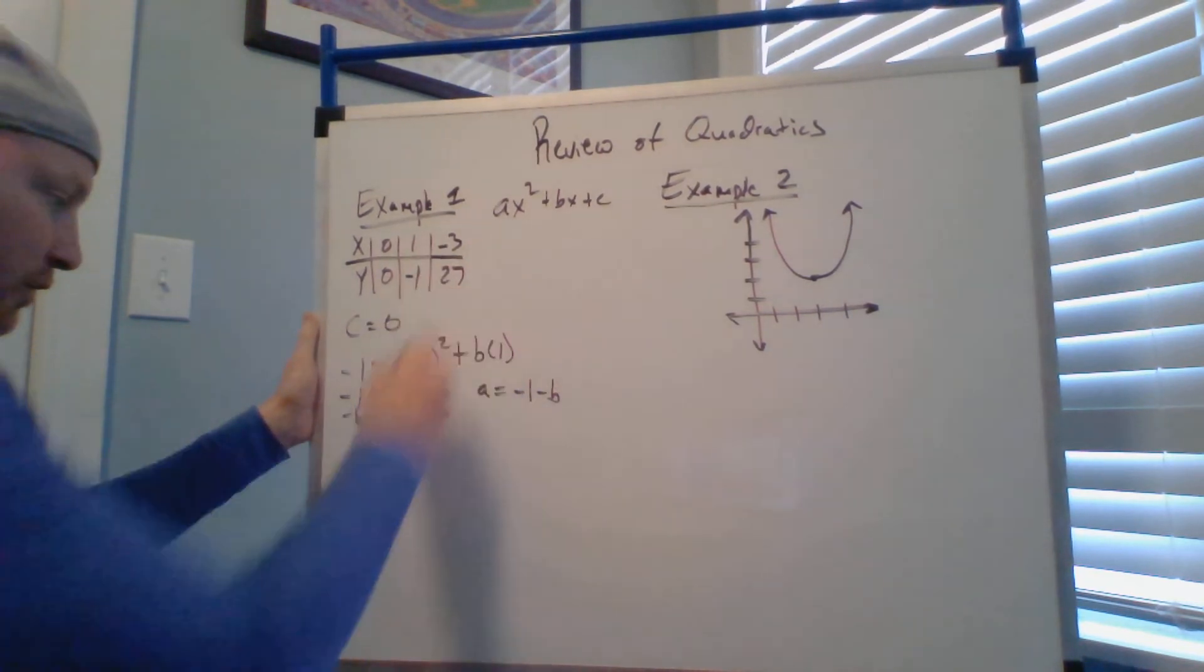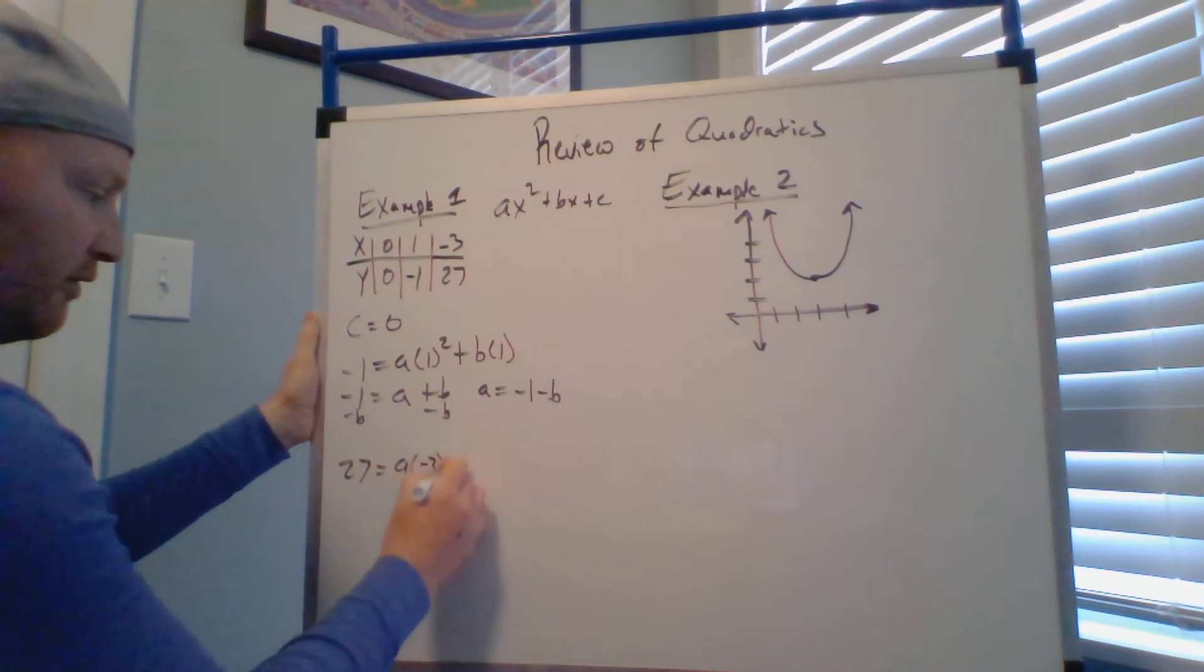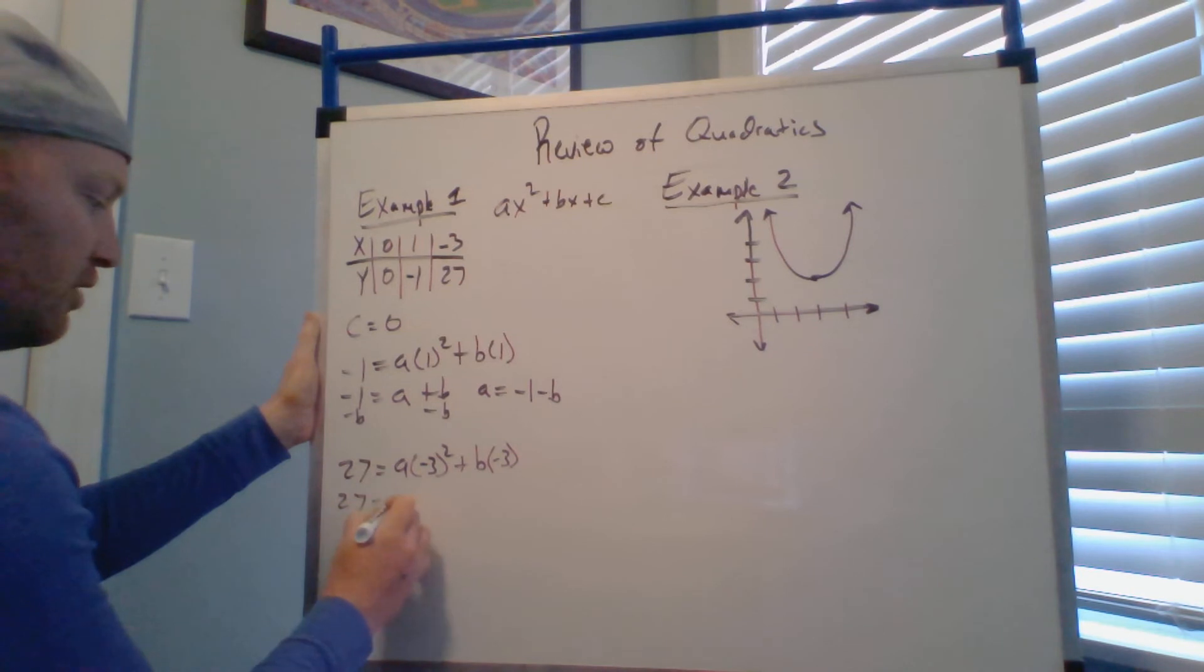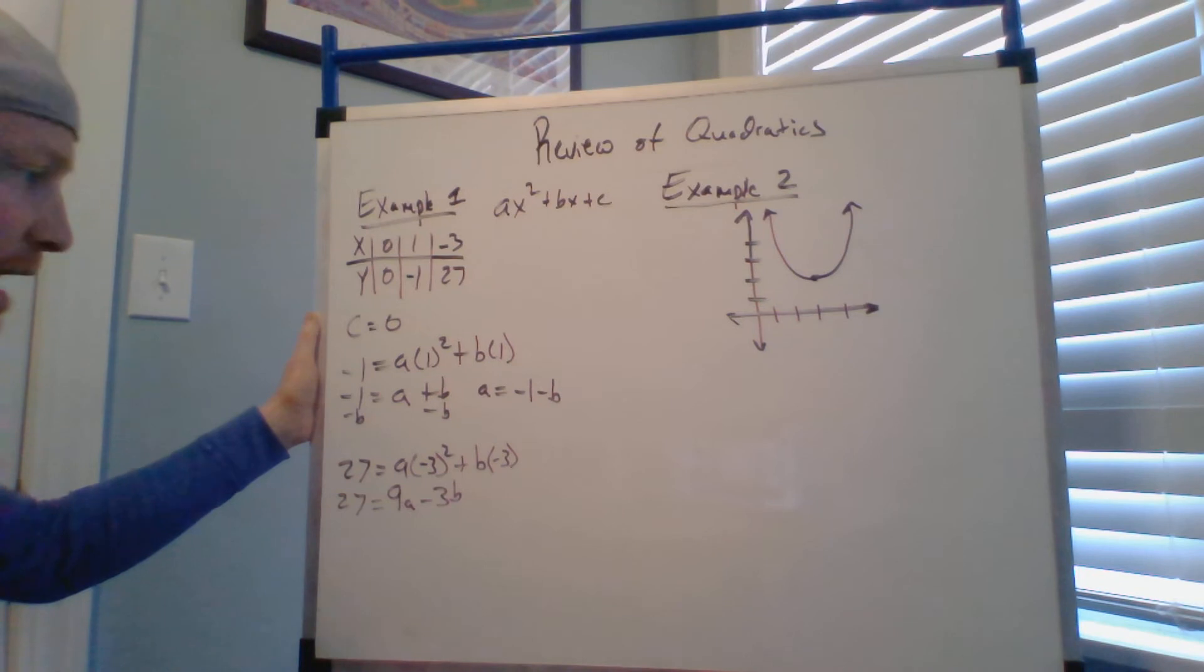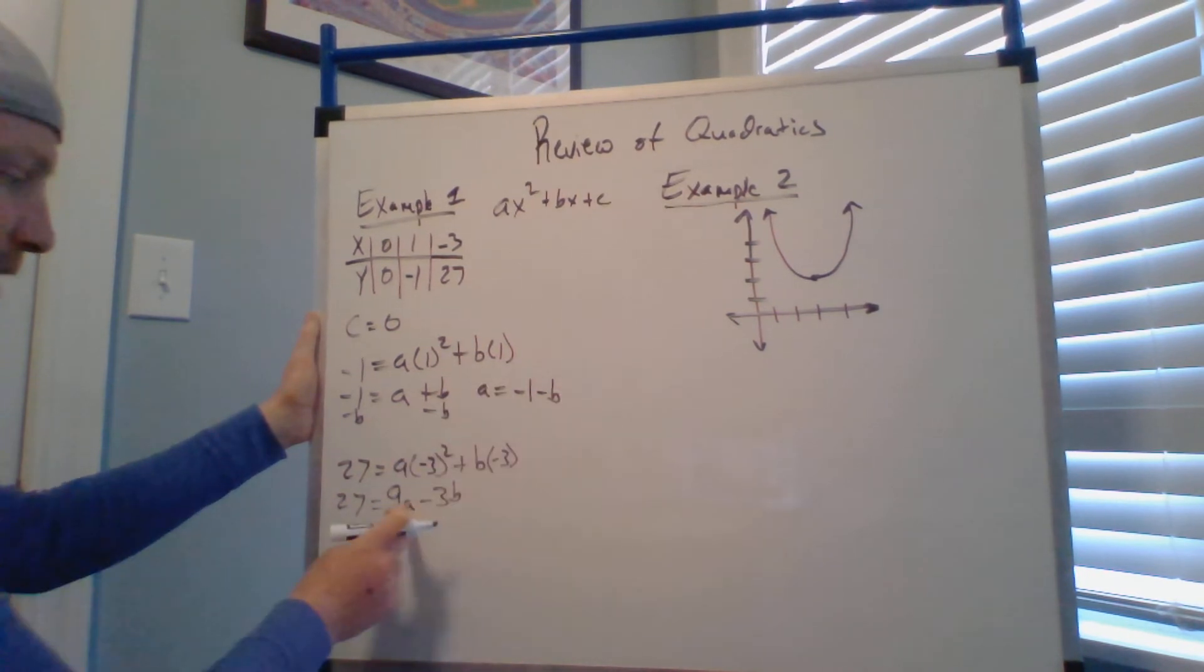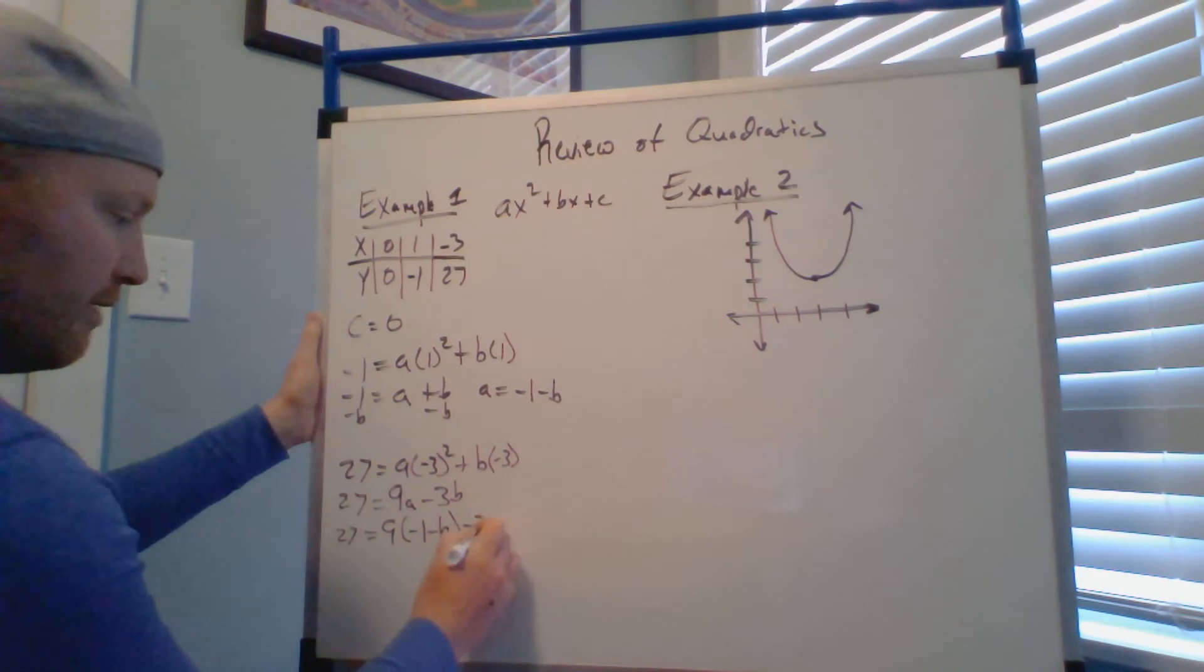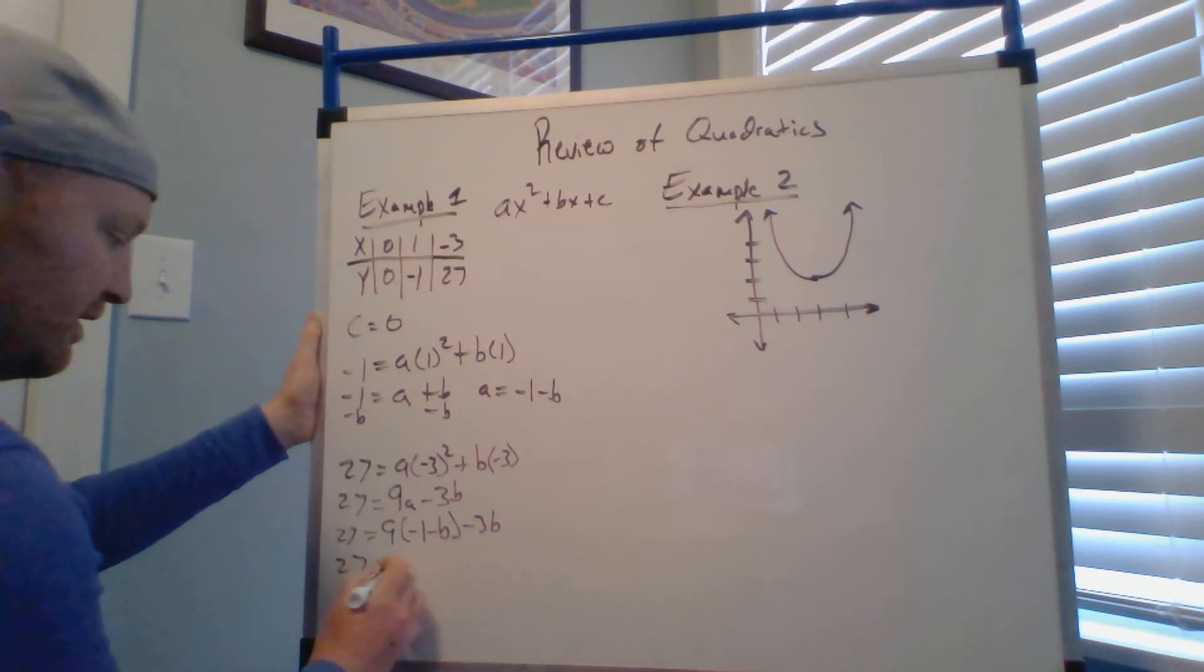We'll use that in a minute right here. 27 equals a times negative three squared plus B times negative three, which simplifies to 27 equals 9a minus 3B. And now I'm going to solve, and I've already got my one expression in terms of a, so I'm going to go ahead and replace that with a down here.